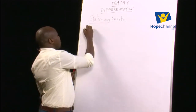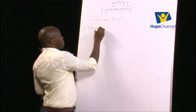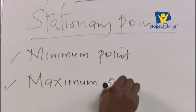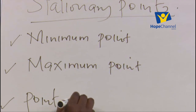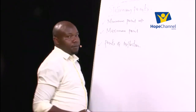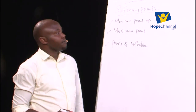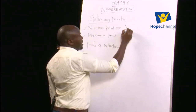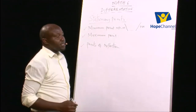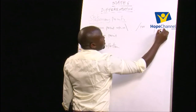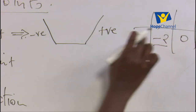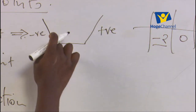Under stationary points, we have three types of points. First is the minimum point. The second is the maximum point. The third is points of inflection. For a point to be called a minimum point, the gradient function must go from negative, through zero at that point, then to positive — for example, in a table: negative, 0, positive.